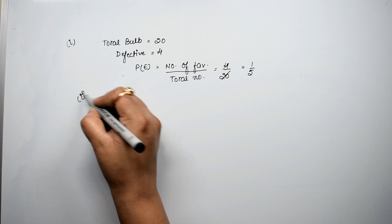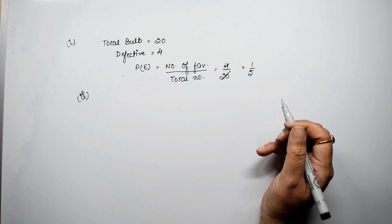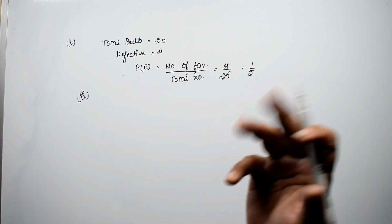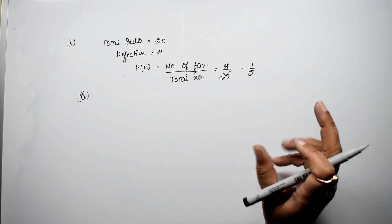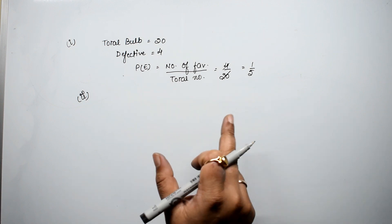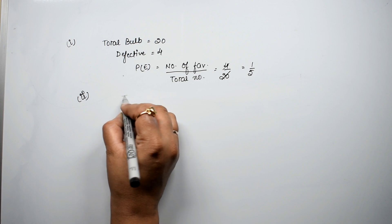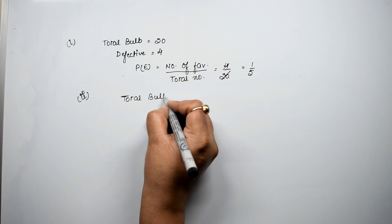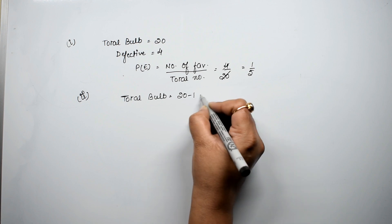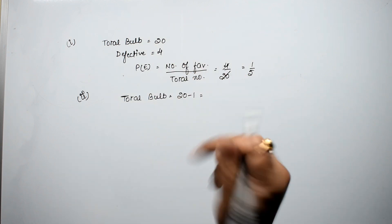Let's do second part now. Suppose the bulb drawn in first is not defective and not replaced. Assume that the bulb drawn in the first case was neither defective nor replaced. Now a bulb is drawn at random from the rest, from the remaining ones. One bulb has already been taken out. So now our total bulbs are 20 minus 1, that is 19. The bulb is taken out from the rest, meaning from what remains.